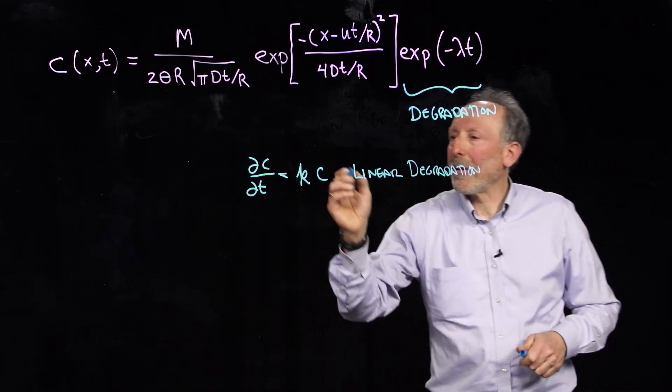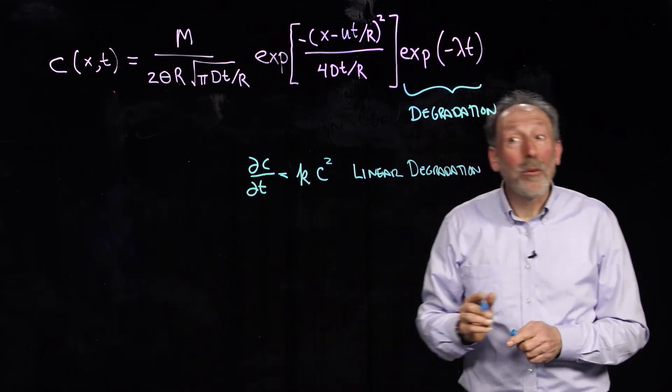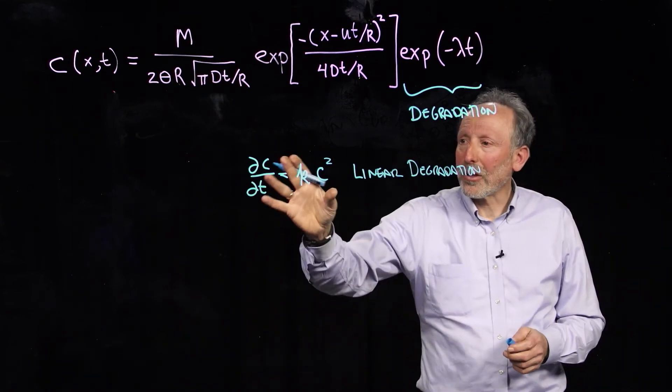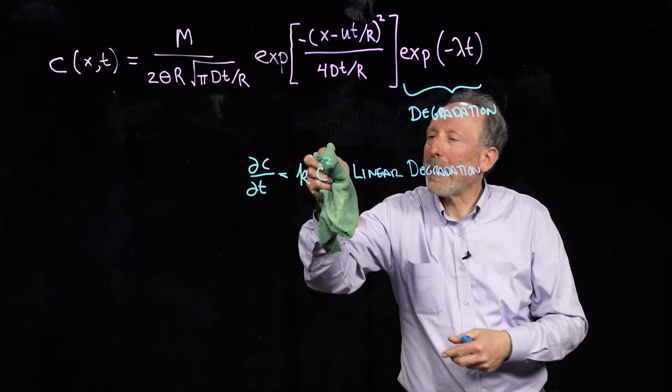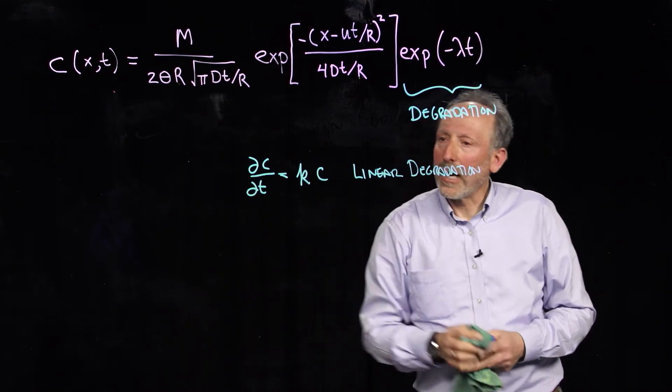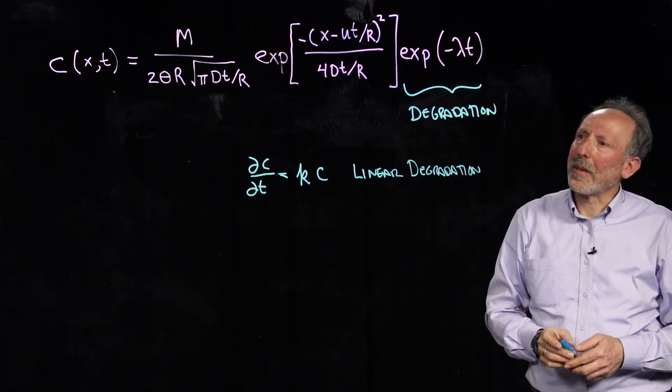Whereas, for example, if I had C squared, that would not be a linear equation. If I doubled concentration, we'd get a completely different solution. So, we're using a very, very special case of a linear absorption here, a linear degradation.